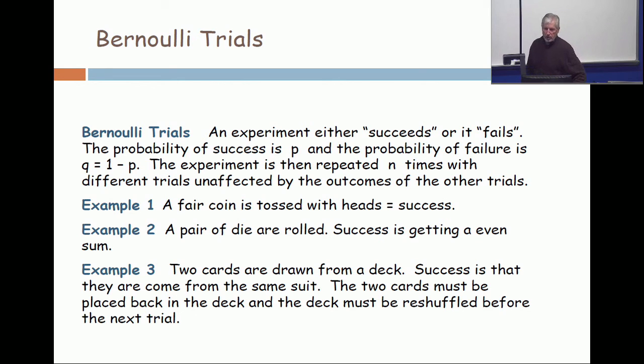Probability of success is some value p, and probability of failure is 1 minus p, and people often denote that with a symbol q. But then the experiment is repeated over and over again, a total of n times, but it's very important that one trial doesn't affect the outcome of other trials.